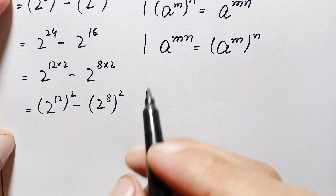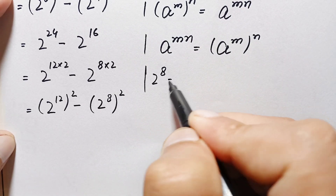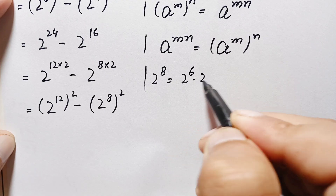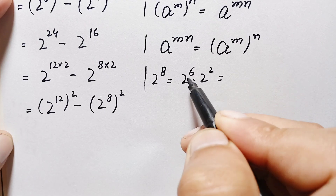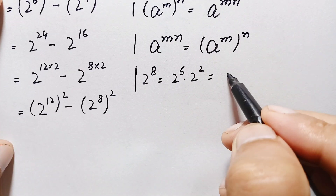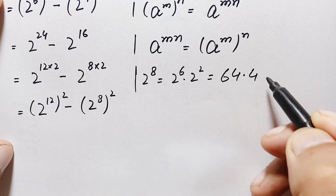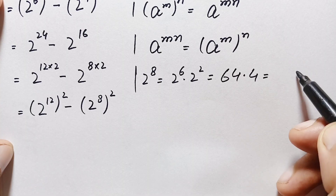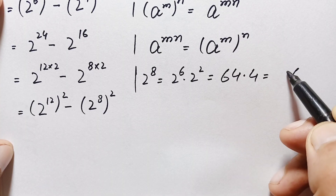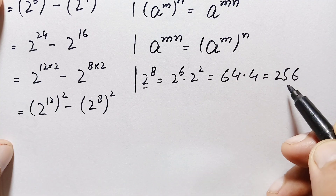Now we find the value of 2^8. We write 2^8 as 2^6 × 2^2. Since 2^6 = 64, this becomes 64 × 4. Multiplying: 4×4=16, carry 1; 6×4=24, plus 1 = 25. So the value of 2^8 is 256.